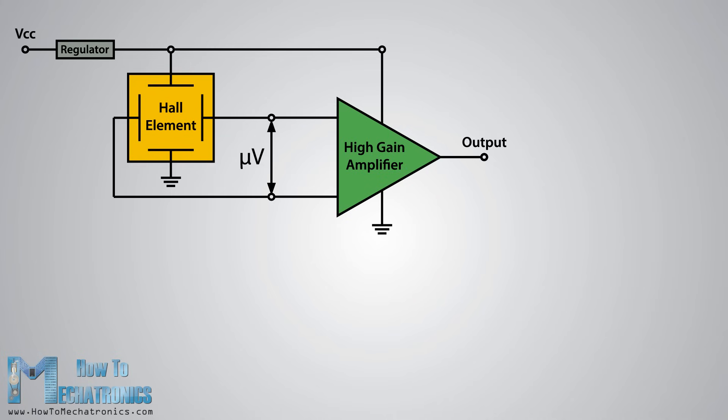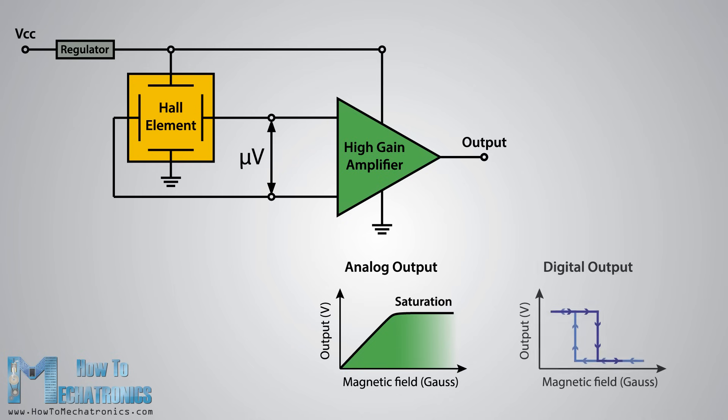There are two types of Hall effect sensors, one providing analog and the other digital output. The analog sensor is composed of a voltage regulator, a Hall element and an amplifier.